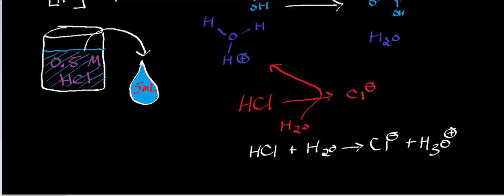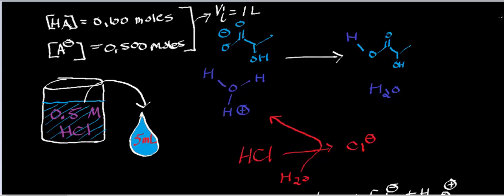But what we're going to do in this video is something a little bit different. We have basically the same circumstances as in the previous videos — we're going to be using A- as our lactate and HA as our lactic acid. We had 0.1 moles of lactic acid and 0.5 moles of lactate. I want to figure out what the pH is and the change in pH if we add 5 milliliters of 0.5 molar HCl to the solution. Keep in mind that our initial buffer has a total volume of 1 liter.